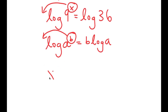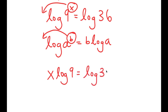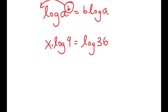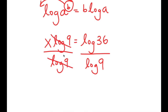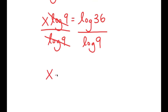So now I get x times log 9 is equal to log 36. To isolate x, I'm going to divide both sides by log 9. These two cancel out, and I get x is equal to log 36 over log 9.